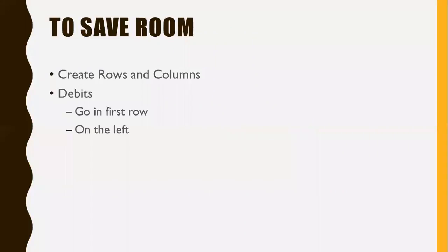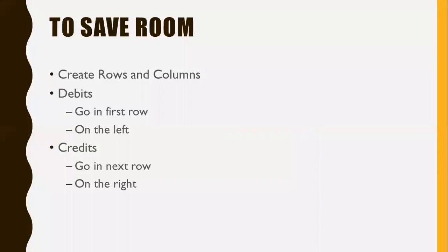Journal entries are just a table where we have specific rows and columns. Our debits always go in the first row of the table and the amount is always on the left. Credits go in the next row and the credit amounts are always on the right. So debits on the left, credits on the right.